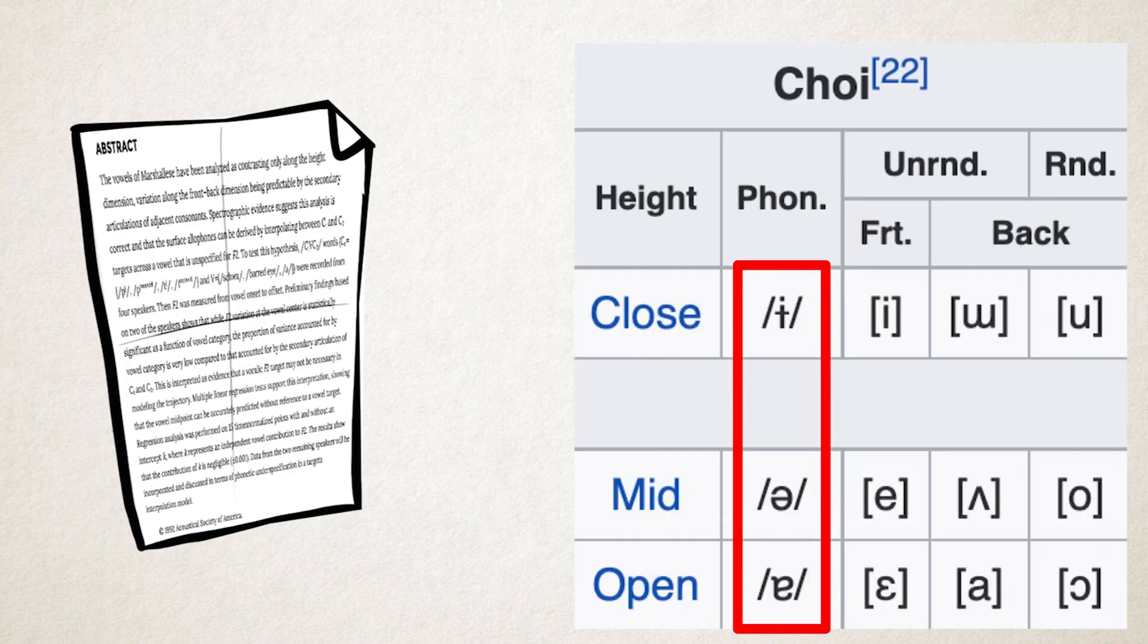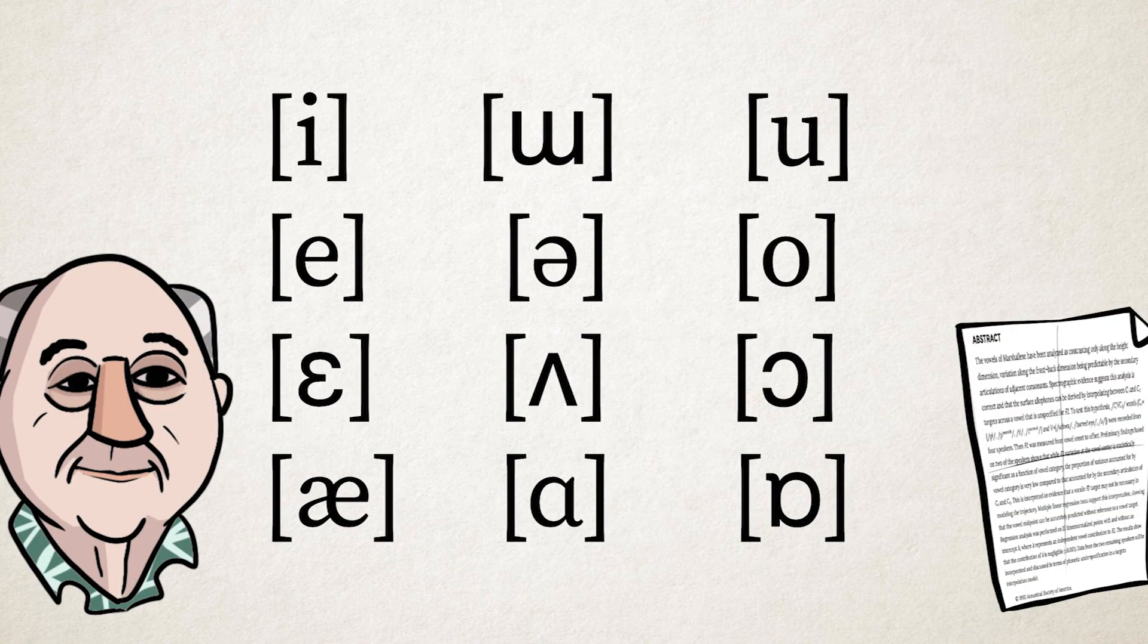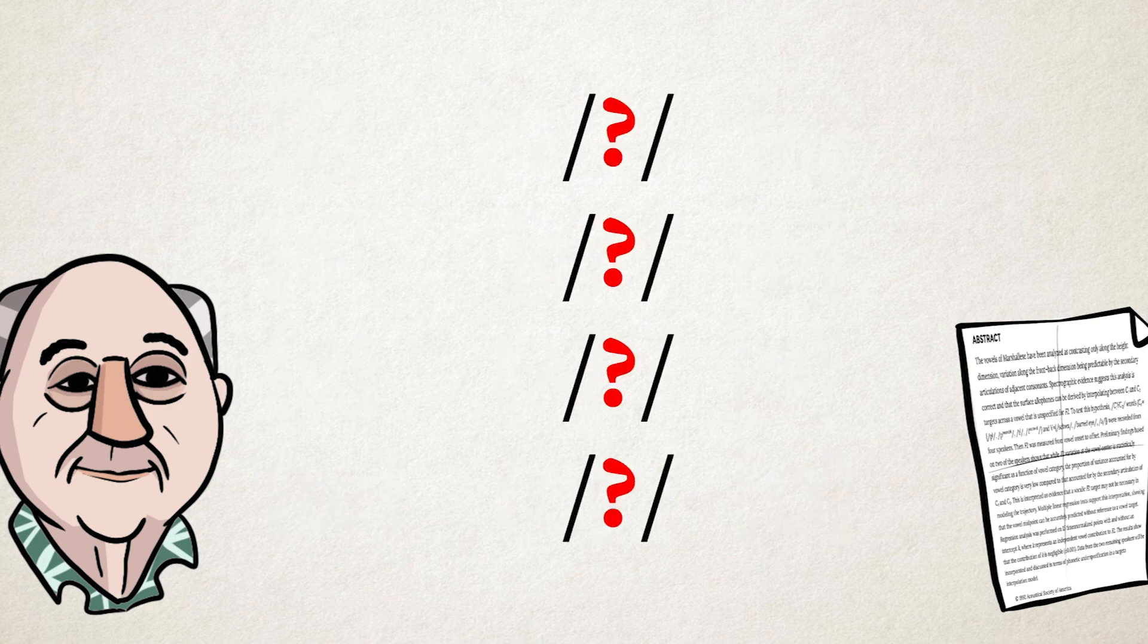John D. Choi is all like [i], [ɪ], [e], [ɛ]. And long story short, linguists mostly agreed on the allophones, but didn't really agree on the phonemes.